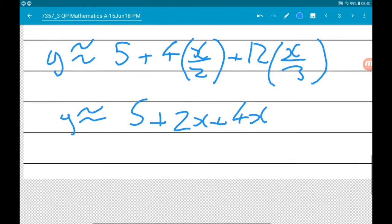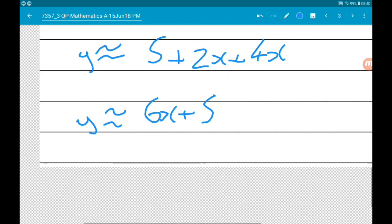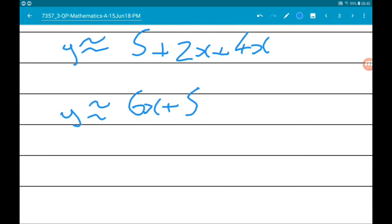So y is approximately 6x plus 5. Now that is a straight line.